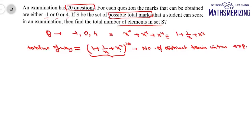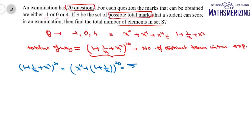Instead, we rewrite the expansion: (1 + 1/x + x⁴)²⁰ becomes (x⁴ + 1 + 1/x)²⁰, divided appropriately. Applying the binomial expansion, we write the sum where r varies from 0 to 20: 20Cr · (x⁴)^(20−r) · (1 + 1/x)^r.